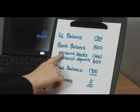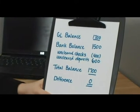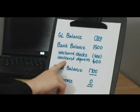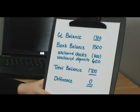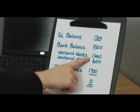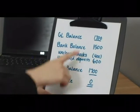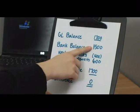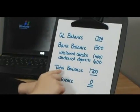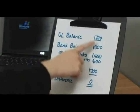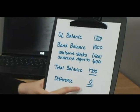What is different is that we have checks we've written of $400 that the bank has not cleared, and we have received a deposit of $600 which we took to the bank but the bank has not yet cleared. Therefore these two items are not included in the $1,500 balance. So in order to get from our balance to the bank balance, we would take the bank balance minus the uncleared checks plus our deposits, and that gets us to a matching $1,700. That way we know that we're matching what the bank has.